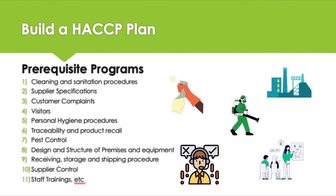Hygienic practices need to be in place before doing HACCP. Common prerequisite programs may include, for example, cleaning and sanitation procedures, personal hygiene, traceability and recall programs, pest control programs, and training. Receiving, storage, and shipping procedures, among others, are also included.